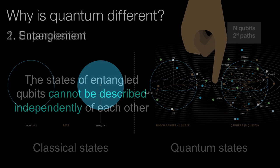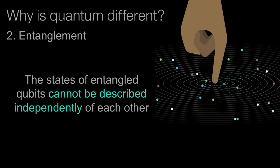The second quantum effect is entanglement. With two qubits entangled together, measuring the first qubit can tell you something about what will happen when you measure the second qubit. Entanglement is the second property that gives quantum information a really unique difference.